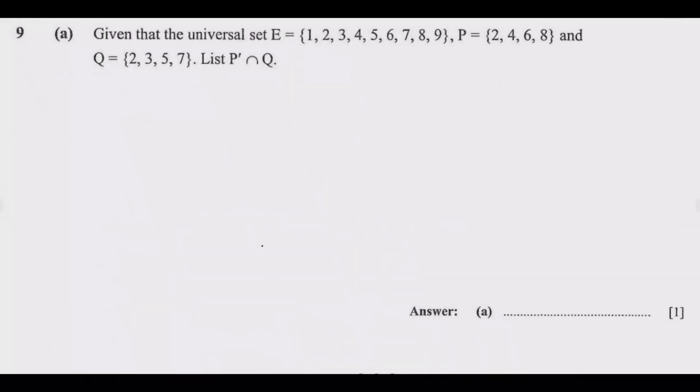We look at question 9a. Given that the universal set E equals {1, 2, 3, 4, 5, 6, 7, 8, 9}, then set P = {2, 4, 6, 8} and Q = {2, 3, 5, 7}. List P complement intersection Q. This question always comes—there's a question that will involve finding the intersection, dealing with complements and normal sets.